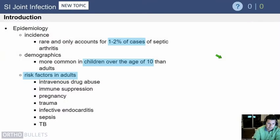This is the last topic, and we get into more rare things. SI joint infections are quite rare, accounting for only one to two percent of septic arthritis cases. It's more common in older children, so early adolescents or adolescents.